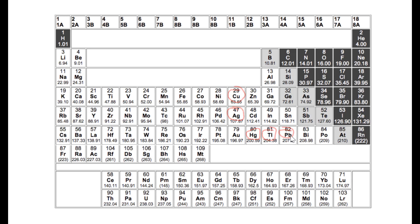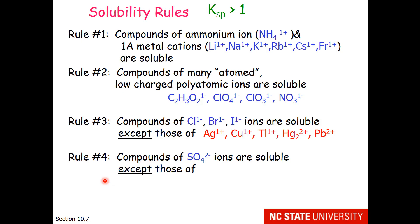All these ions are located in a similar position where they have high electronegativities. Rule 4 finally deals with something of higher charge. Compounds of sulfate ions are soluble. But there are exceptions. Calcium, strontium, barium, and lead ions with sulfate are insoluble.